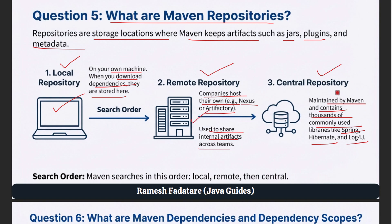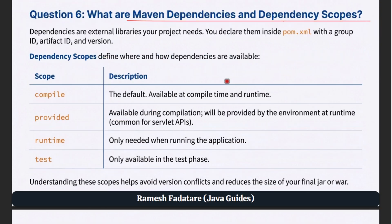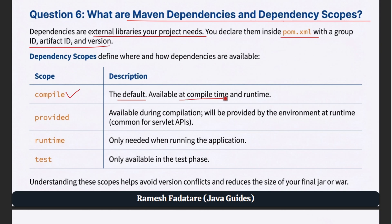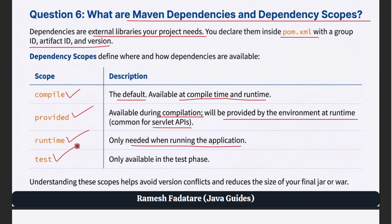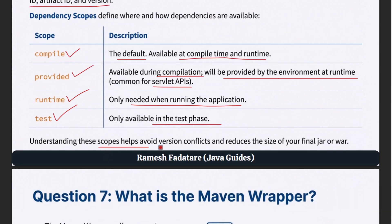Question 6: What are Maven dependencies and dependency scopes? Dependencies are external libraries your project needs. You declare them inside pom.xml with a groupId, artifactId, and version. Maven has different dependency scopes that define where and how dependencies are available. Compile scope is the default — it makes the dependency available at compile time and runtime. Provided scope means the dependency is available during compilation but will be provided by the environment at runtime, common for Servlet APIs in web apps. Runtime scope is only needed when running the application. Test scope is only available in the test phase. Understanding these scopes helps avoid version conflicts and reduces the size of your final JAR or WAR.